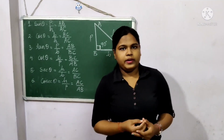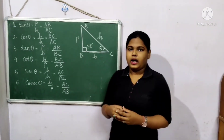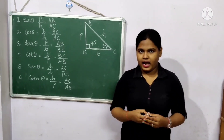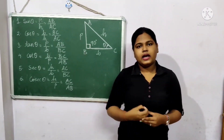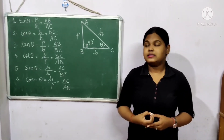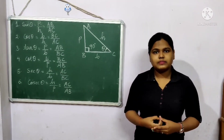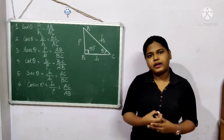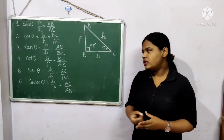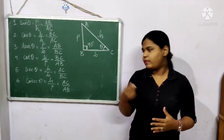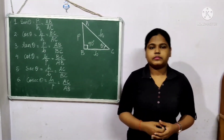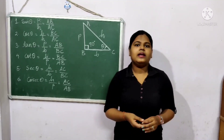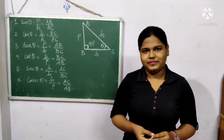So these are the six trigonometrical ratios: sine theta, which is perpendicular by hypotenuse; cos theta, which is base by hypotenuse; tan theta, which is perpendicular by base; cot theta, which is base by perpendicular; sec theta, which is hypotenuse by base; and cosec theta, which is hypotenuse by perpendicular. These are the six trigonometrical ratios you have learned today. Thank you for your attention.